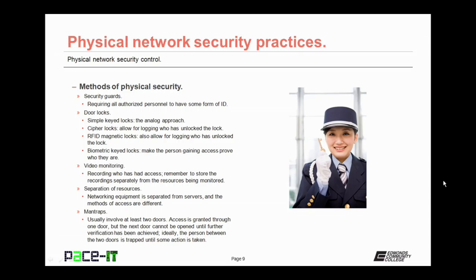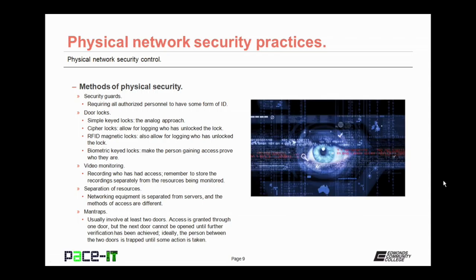Then there are door locks. You could use simple key locks — the analog approach. A slightly more advanced method would be cipher locks with different codes for different areas or groups of people, which allows for logging of who has unlocked a door. You might also implement RFID magnetic locks, which also allow for logging. One of the most advanced types of door locks would be a biometric lock — these require the person gaining access to prove who they are through a fingerprint scan, retinal scan, or possibly even a voice print.